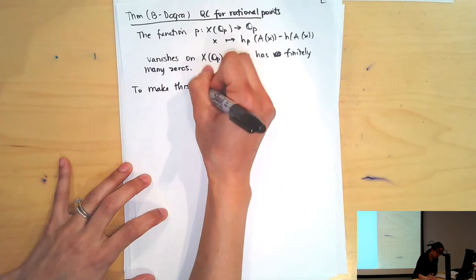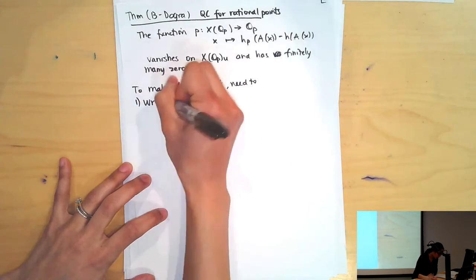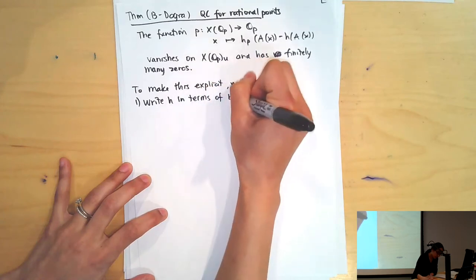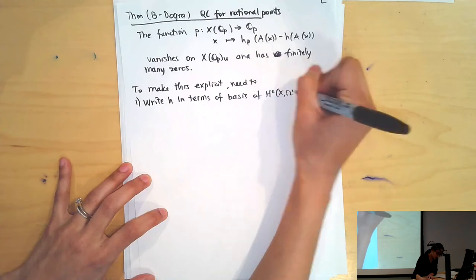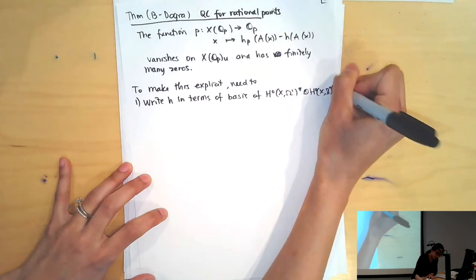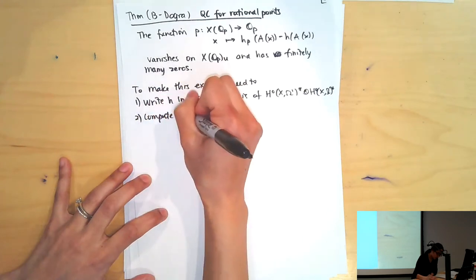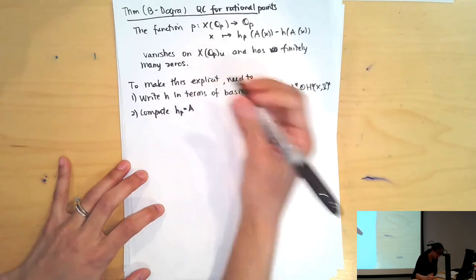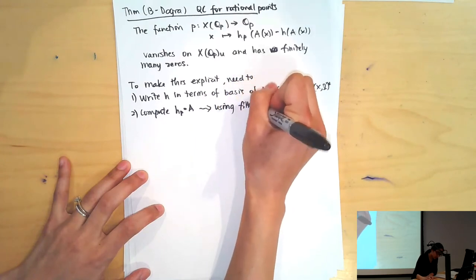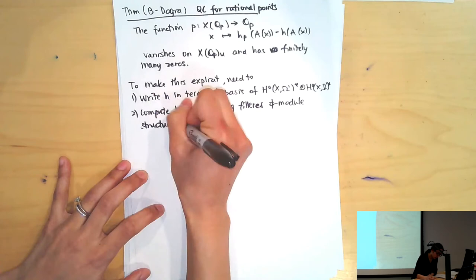What we like to do is make this explicit and compute the set X(Q_p)^U. To make this explicit, we need to do two things: first write the global height H in terms of our basis for the space of bilinear forms, and compute the local height of one of these mixed extensions.